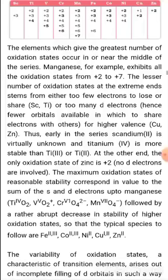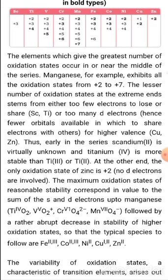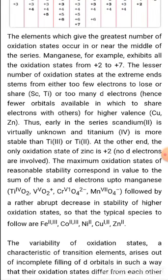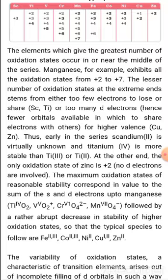For copper and zinc, they have too many electrons in the d subshell, which is why they show low oxidation states. Scandium's +2 oxidation state is virtually unknown — no compound with +2 has been found so far. Titanium's +4 is more stable than +3 and +2. At the other end, zinc shows only +2 because removing two 4s electrons leaves it with a stable 3d¹⁰ configuration.